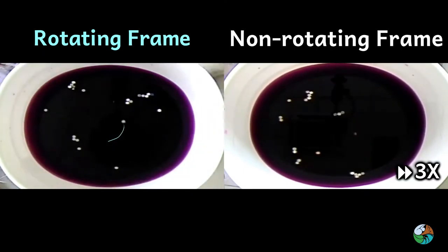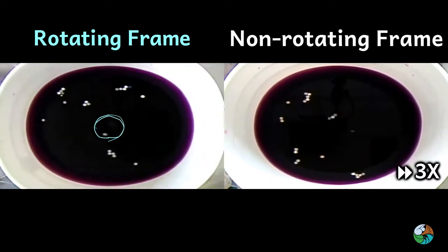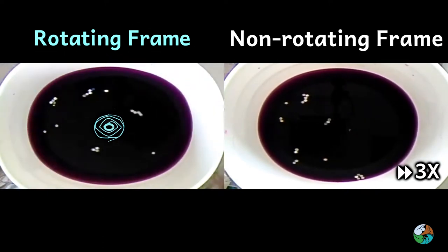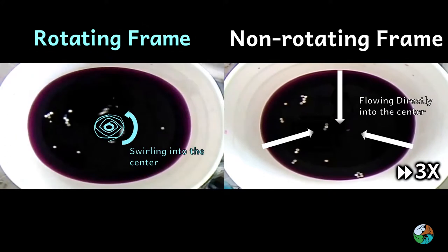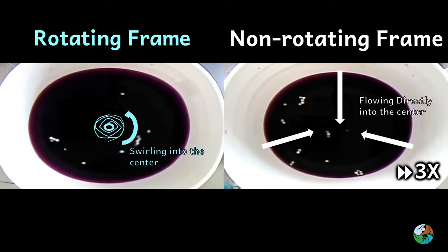From the above experiment, we can see that the trajectories of the paper dots are different when the bucket is rotating and not rotating. It means that the flowing direction of the air parcels are different in a rotating frame and a non-rotating frame.